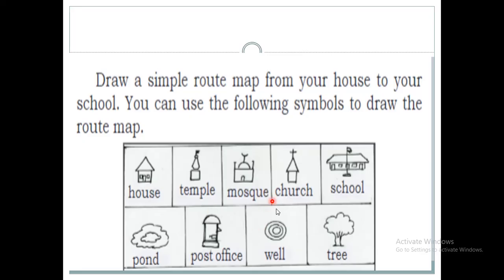Now here is a picture showing the symbols you can use to draw a route map. This symbol is for a house, this one for a temple, this one to represent a mosque, this one for a church, and this symbol represents a school. To represent a pond, well, post office, and tree, there are specific symbols as well. These are the symbols we can use to draw a route map.